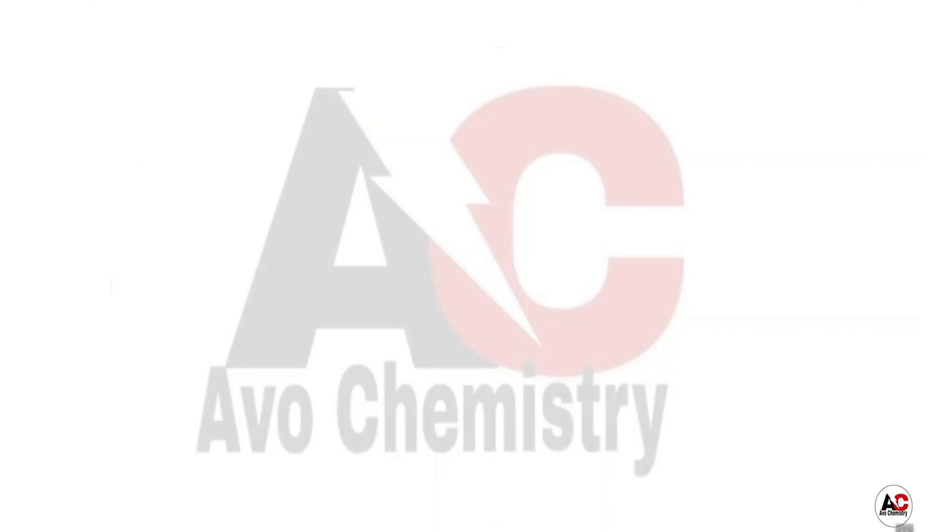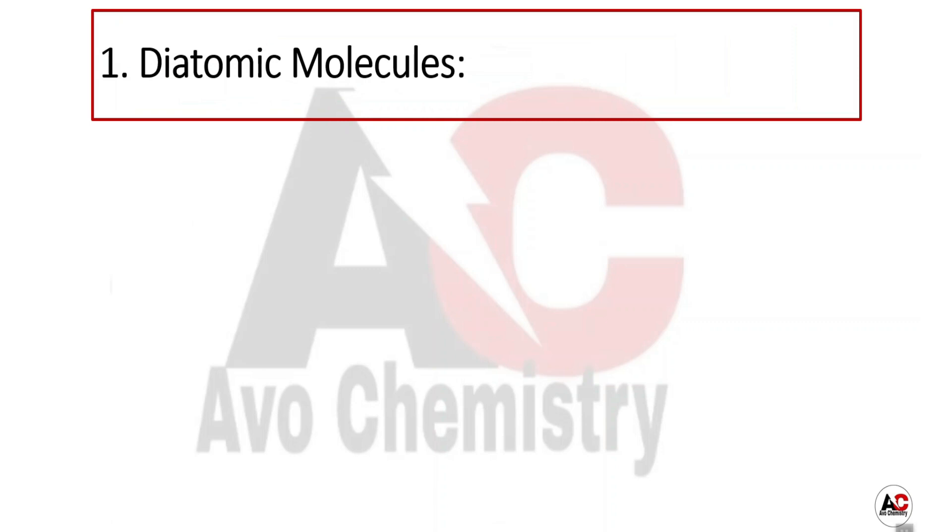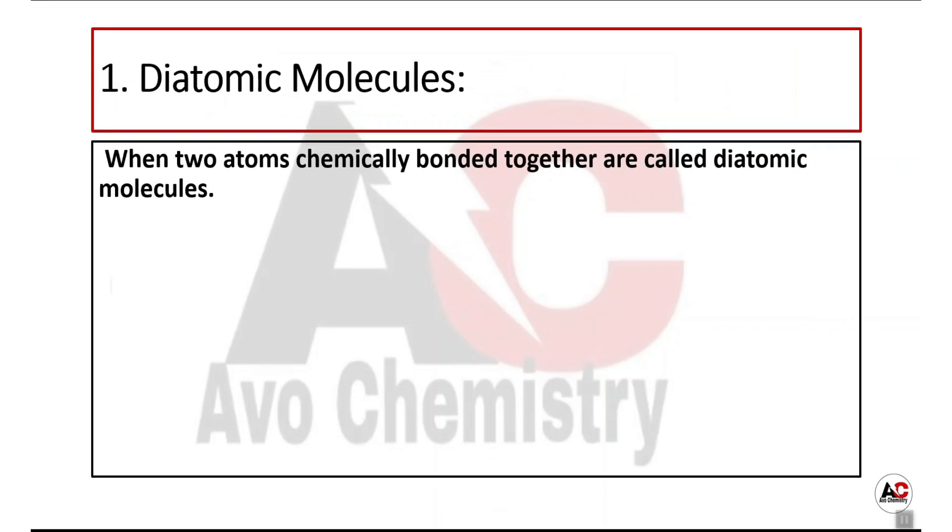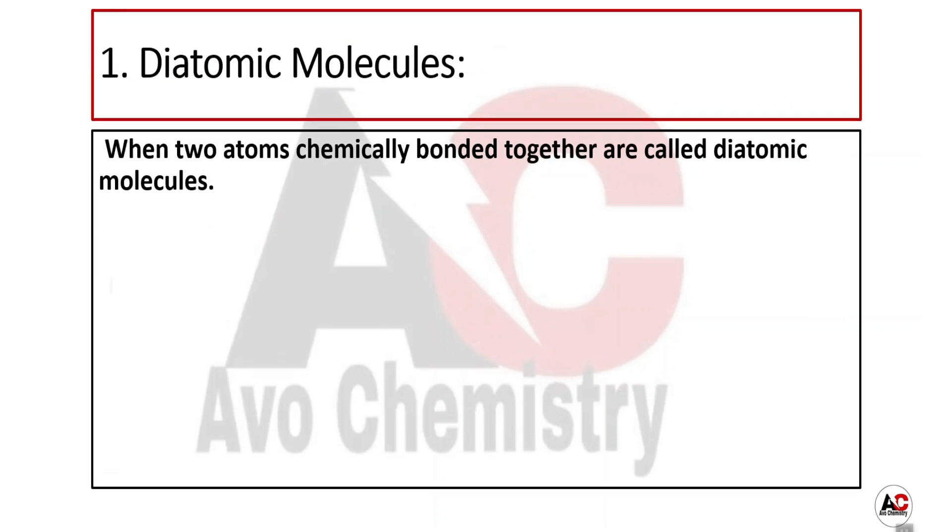Di means two, so its name is diatomic molecules. Diatomic molecules are of two types: homonuclear diatomic molecules and heteronuclear diatomic molecules.